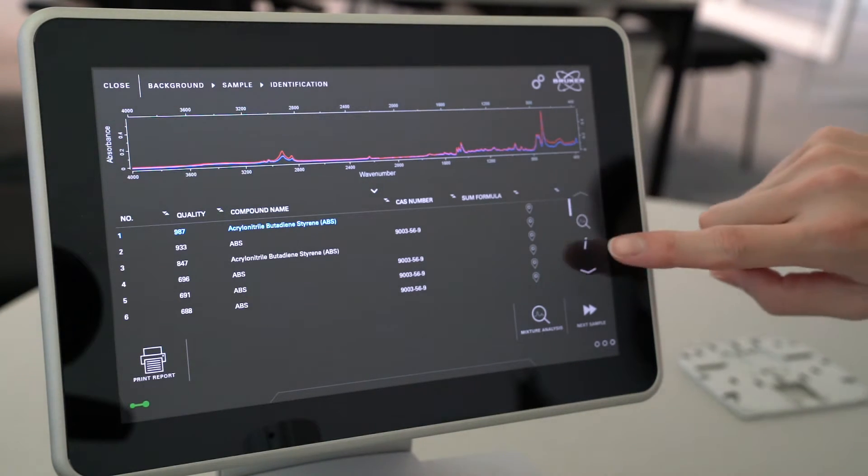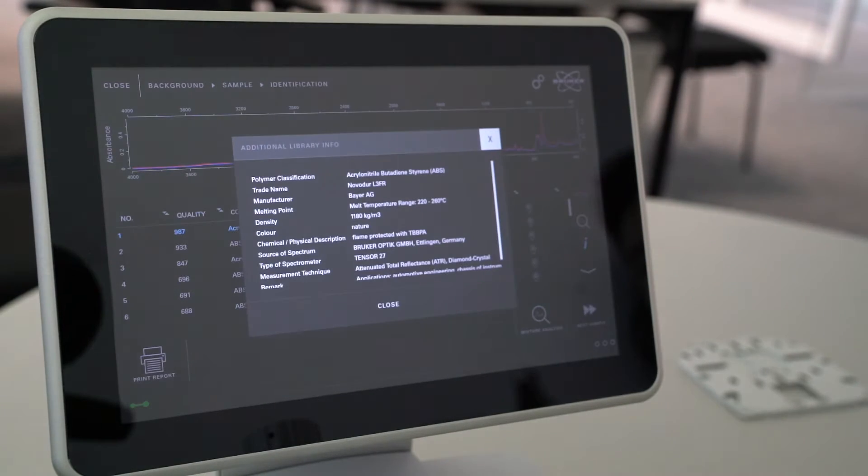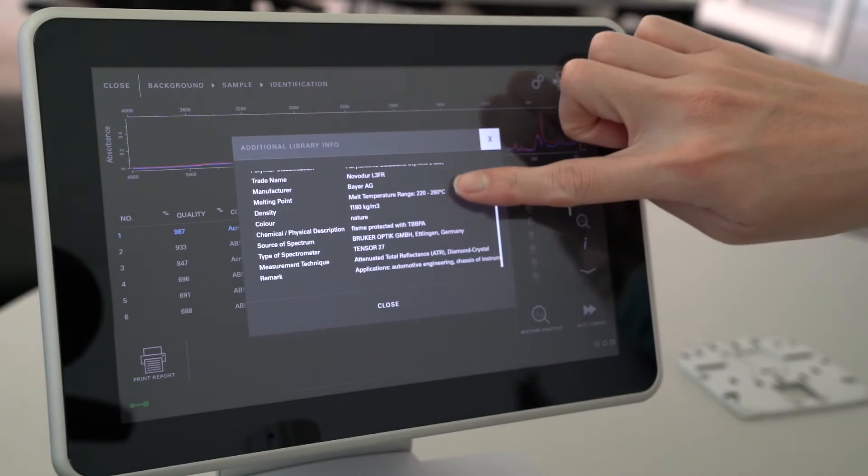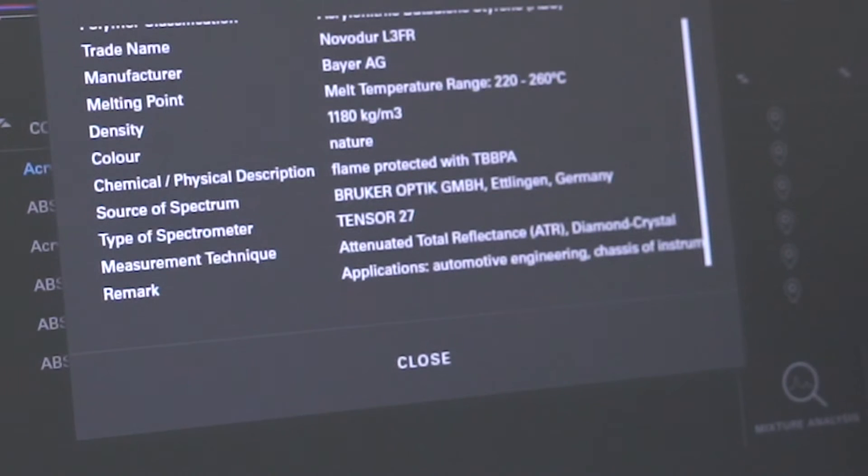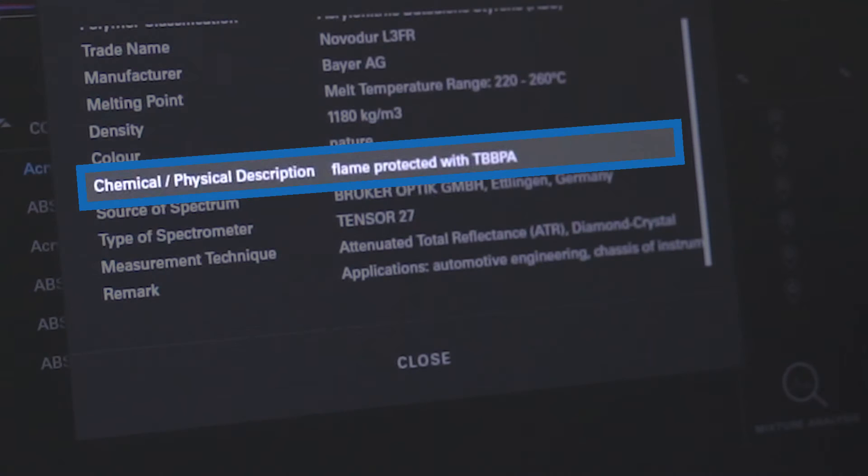We can learn more through Bruker's exclusive KIMW library, which tells us the name, manufacturer, density, melting point, and if the sample contains a flame retardant. It looks like this piece of plastic does.